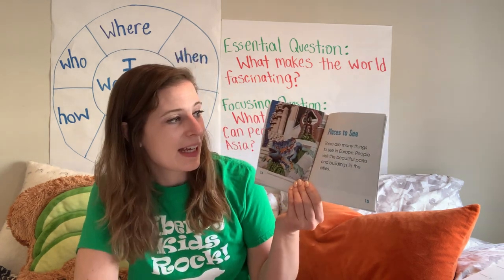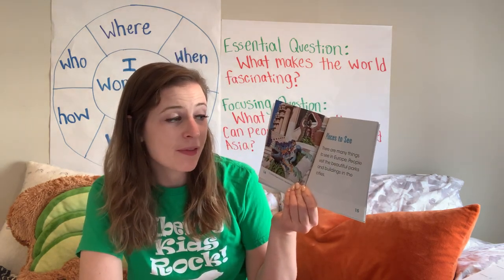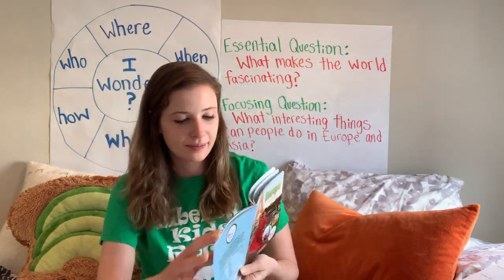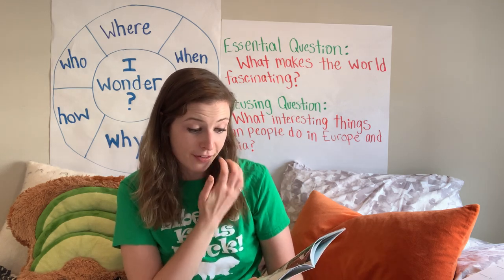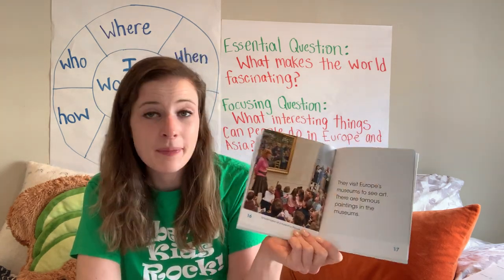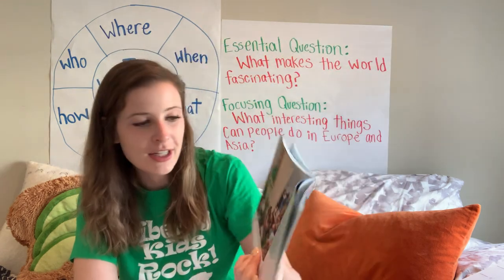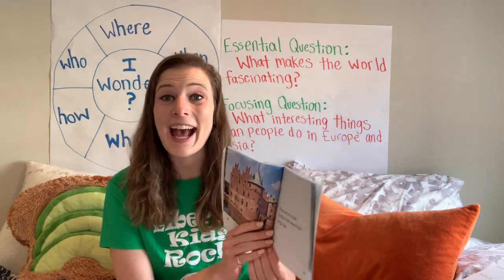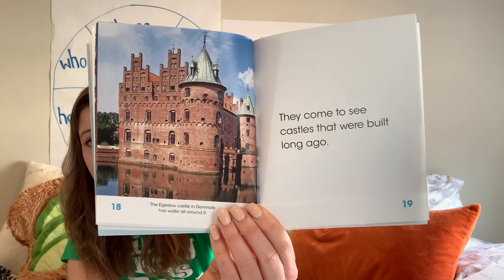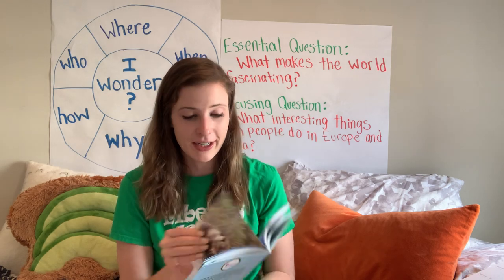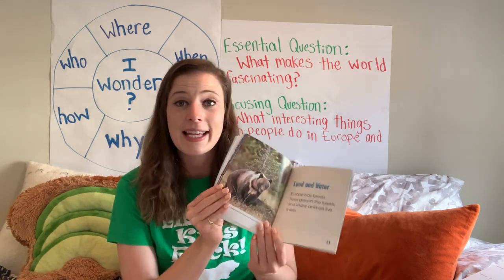Places to see: there are many things to see in Europe. People visit the beautiful parks and buildings in the cities. This is a colorful dragon fountain in Barcelona, Spain. They visit Europe's museums to see art — there are famous paintings in the museums. They also come to see castles that were built long ago. In Europe, there are lots of super old castles, and this one is in Denmark.